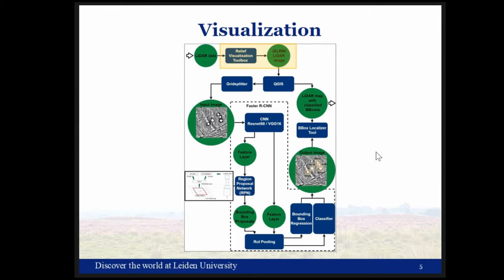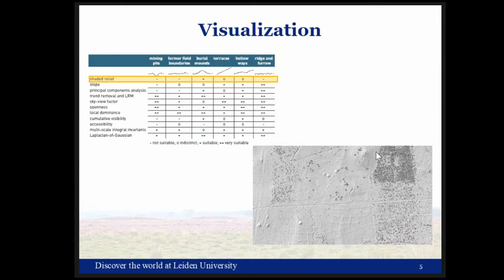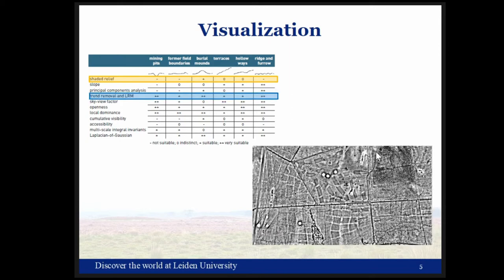The first step in the workflow was to visualize the LiDAR data. In the Netherlands LiDAR data is normally visualized as hillshade or shaded relief. However, based mostly on the work of Kokalj and Hesse, we tried all available visualization techniques and found some better suited for our research area and archaeological objects. We ultimately decided to use the Local Relief Model — or Simple Local Relief Model — from the RVT toolbox.